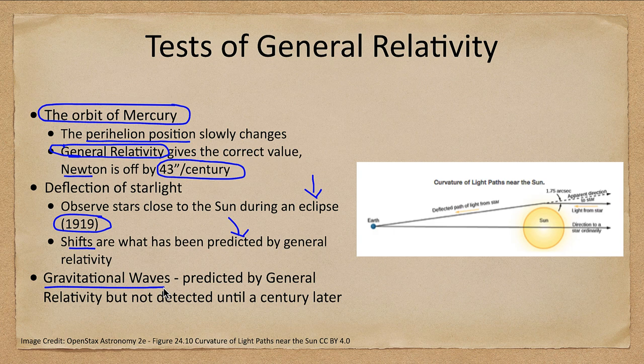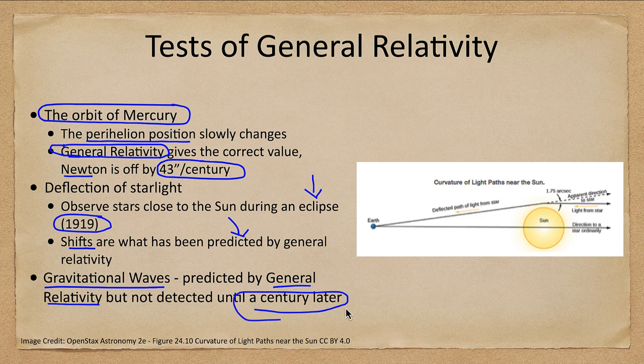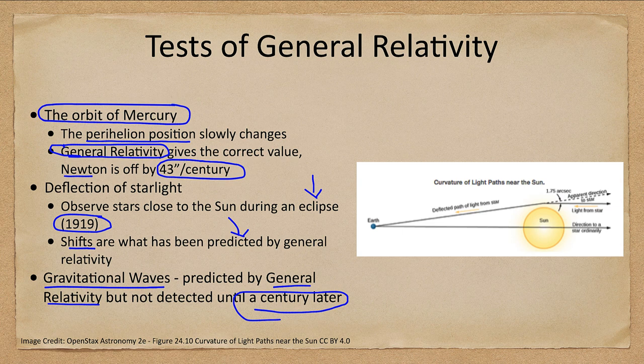We also looked at gravitational waves. Now we'll look at these in more detail in another lecture, but these were predicted by general relativity over a hundred years ago. But it took about a hundred years, a century, for us to be able to have the technology to detect the incredibly small motions caused by gravitational waves rippling through space.